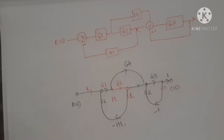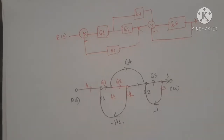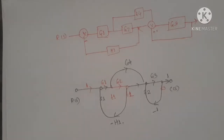So this is the method of drawing a signal flow graph from a block diagram. It is very easy. First, mark all summing points, takeoff points, input nodes, and output nodes as nodes. Then connect them with branches, and simply mark whatever value is present inside the block as the branch gain.